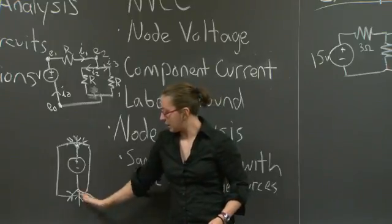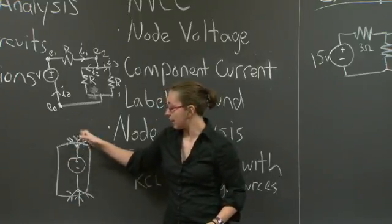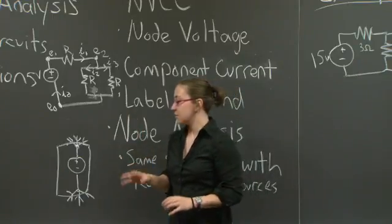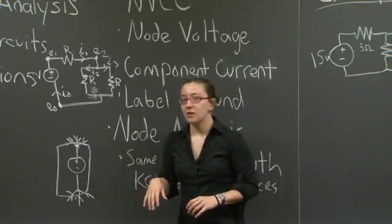So current flowing in and current flowing out, or vice versa, have to sum to 0. That's the major difference. Let's look at an example.